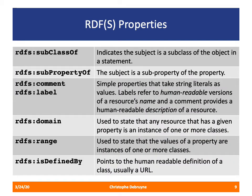RDFS also provides a set of properties. We've already seen RDFS subClassOf. All RDFS properties can be categorized into three groups: one, to create type and role hierarchies; two, to describe characteristics of properties; and three, for human consumption. RDFS subClassOf creates a class hierarchy from more abstract to more specific. Similarly, subPropertyOf creates a hierarchy of properties — we can state that 'love' is a subproperty of 'knows', because if you love somebody you probably know that person as well.